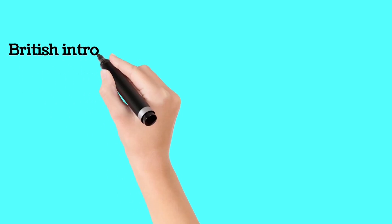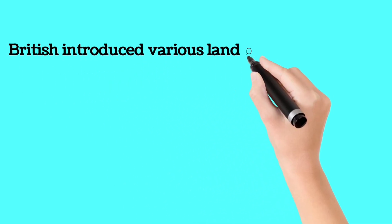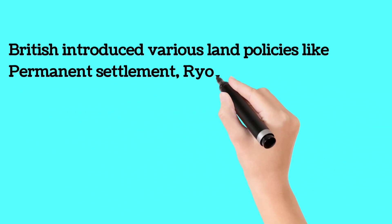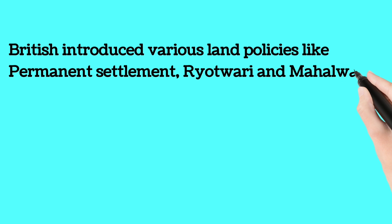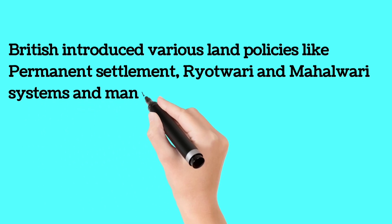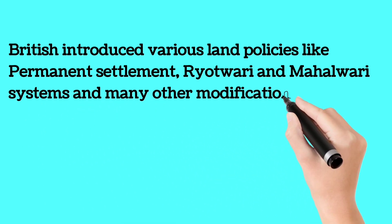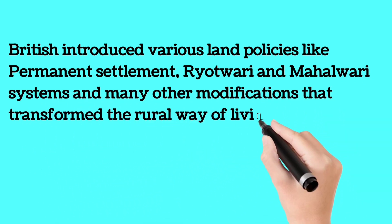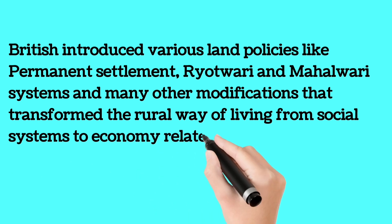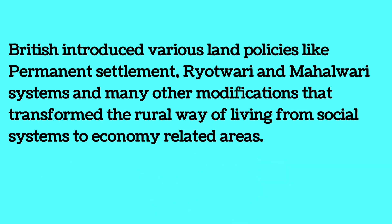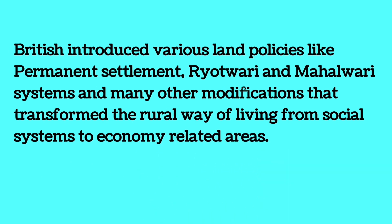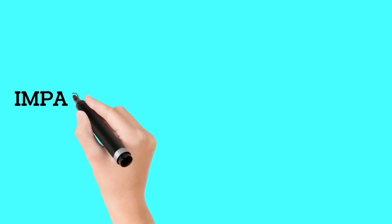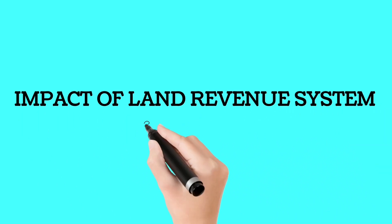The British introduced various land policies like the Permanent Settlement, Ryotwari, and Mahalwari systems, along with many other modifications that transformed the rural way of living, from social systems to economy-related areas. These are the impacts of the land revenue system.